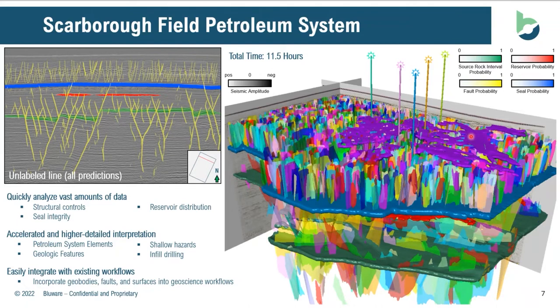No geoscientist would be able to pick this density of faults — perhaps if they had several weeks, absolutely, but it doesn't sort of make sense. But when we utilize the cloud as well as deep learning, this is the agility that we're talking about, allowing geoscientists to unlock that higher level of detail. In just a matter of 11 and a half hours, from importing the data to training to exporting and visualizing in different interpretation packages, we're able to see the reservoir distribution, the structural controls on stratigraphy, as well as the seal integrity. We identified various different petroleum system elements — not just restricted to faults, but now we can characterize reservoirs, seals, etc., and really unlock that higher level of value within the different business units.